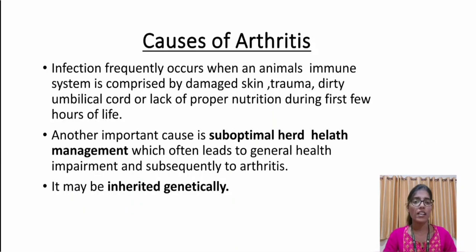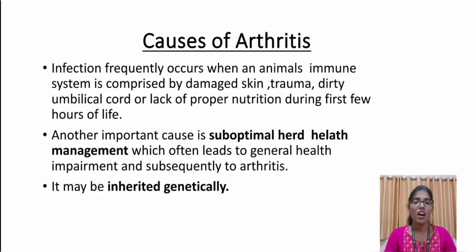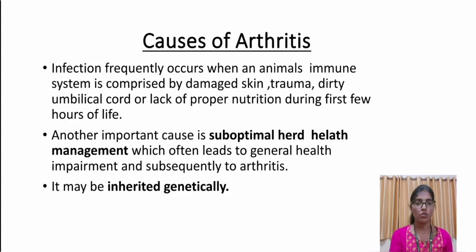The causes of arthritis: infection frequently occurs when an animal's immune system is compromised by damaged skin, trauma, dirty umbilical cord, or lack of proper nutrition during the first few hours of life. Another important cause is suboptimal herd health management, which often leads to general health impairment and subsequently to arthritis. It may also be inherited genetically.